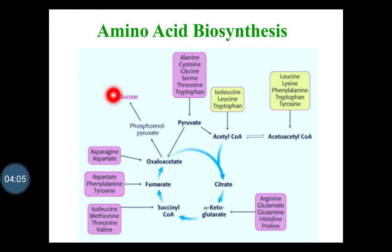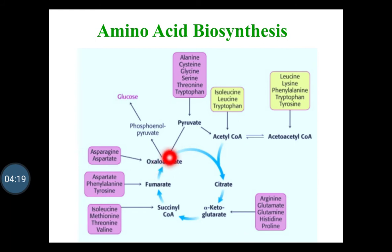In the case of the amino acid biosynthesis, glucose enters with the phosphoenol pyruvate and it forms the acetyl-coenzyme A and enters into the TCA cycle, where oxaloacetate is the receiver and it forms the citrate, alpha-ketoglutarate, succinyl-coenzyme A, and fumarate. In this way, the biosynthesis of the amino acid takes place in plants, and the components which are formed act as a precursor for the biosynthesis of different secondary metabolites.